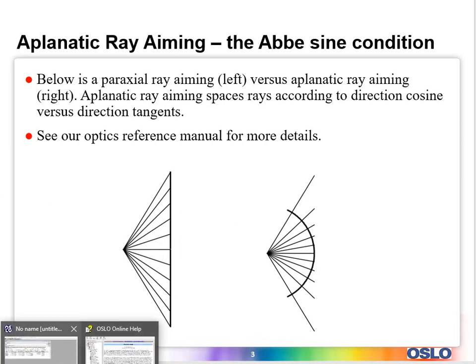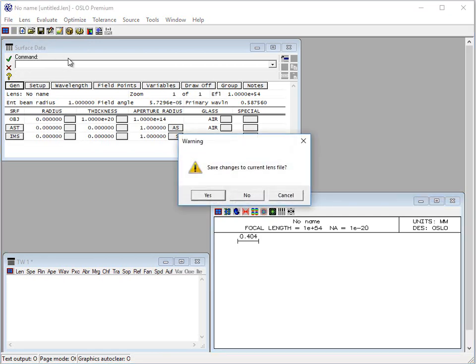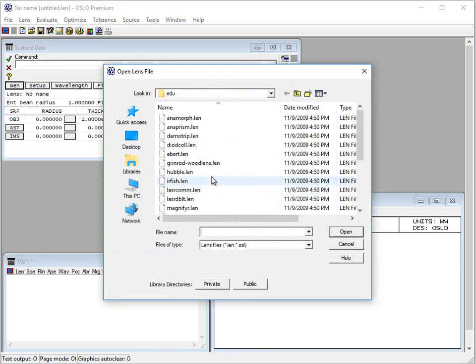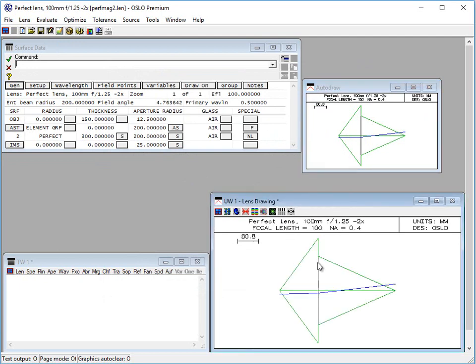Now at this point we'll pull up the program and I'm just going to show a perfect lens. So this is actually in the Oslo edu part of the public directory. There's perfect magnifier two, and if we were to just take a look at the picture.